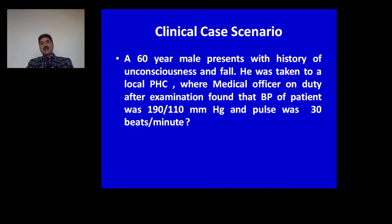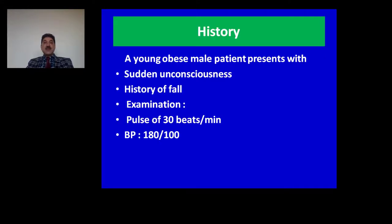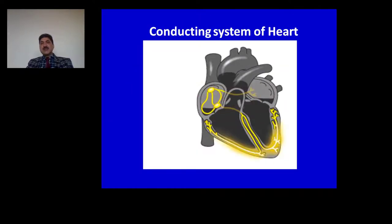Let us discuss a clinical case scenario. A 60-year-old male presents with history of unconsciousness and fall. He was taken to a local PHC where the medical officer found BP of 190/110 mmHg and pulse of 30 beats per minute. History: an obese male patient — obesity being a risk factor for coronary diseases — with loss of consciousness and history of fall. On examination, pulse is 30 beats per minute — that is bradycardia, meaning decreased heart rate — and BP is 180/100, meaning the patient is hypertensive.